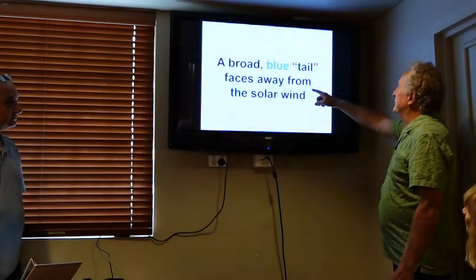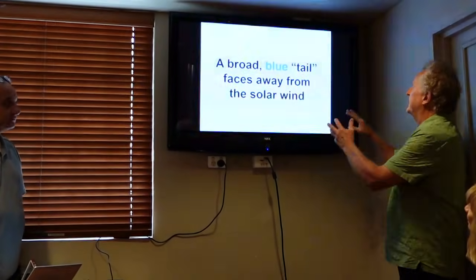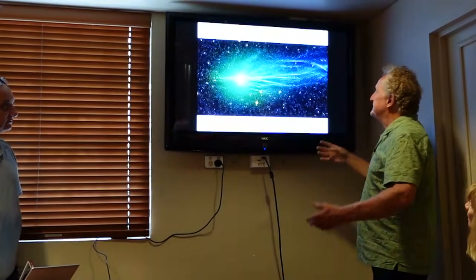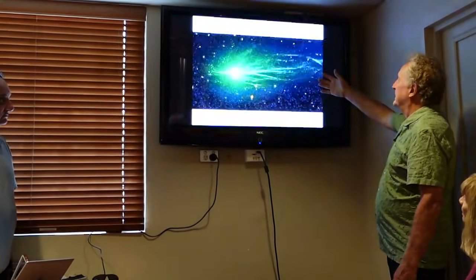A broad blue tail that's away from the wind. Do we expect a comet to have it away from the wind? Let's look at it. There it is, but it's going in a lot of different places. That's very funny. Have you ever seen a comet that looks like that? I never have.